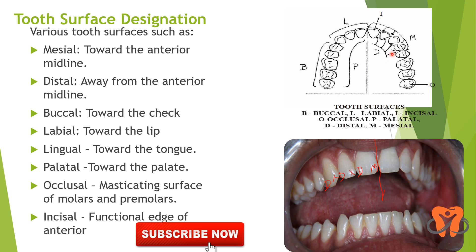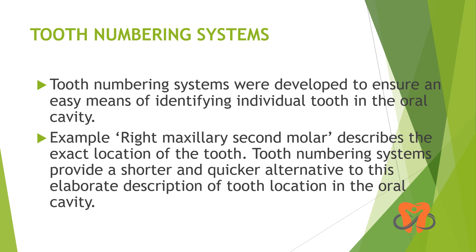Now occlusal surfaces — these are the masticating surfaces of the molars and the premolars. You can see it here. They are the occlusal surfaces. And for the anteriors, the functional edge of the anterior teeth, they are known as the incisal edges. You can see it here as well. So these are the various tooth surfaces.